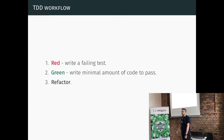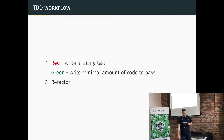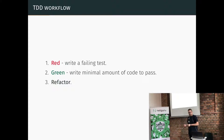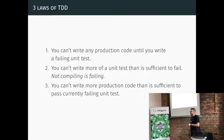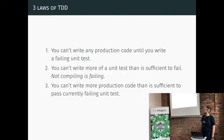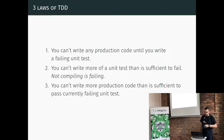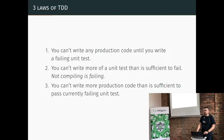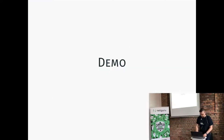The TDD workflow is commonly known: three phases — red, where you have a failing test; green, where you write just enough production code to make the test pass; and then you refactor. What's not commonly known is how to really make the red phase work. To understand that, you need to know the three laws of TDD: first, you can't write any production code until you have a failing unit test; second, you can't write more of a unit test than is sufficient to fail (and not compiling counts as failing); third, you can't write more production code than is sufficient to pass the currently failing test.